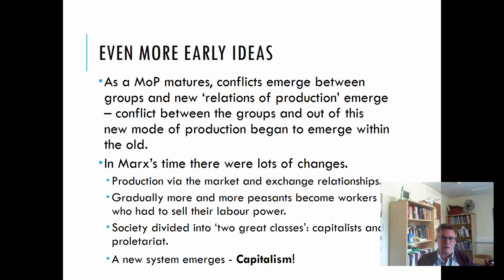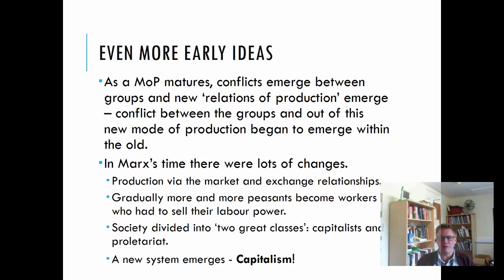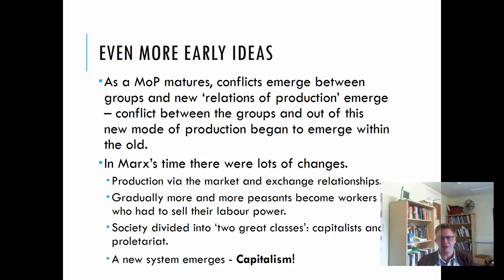New things emerge: you have an old class system, the relations of production change, different classes get angry with each other, and a new form of production emerges. In Marx's time he was writing right in the middle of the industrial revolution — there were a lot of changes going on. Production was moving into the market and there were exchange relationships. People were moving from the old agrarian system into towns and cities, taking jobs in factories. There were new relations of production — working in a factory was very different from working on a farm.